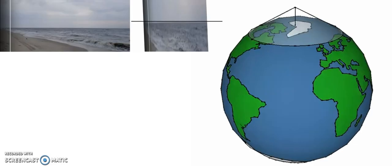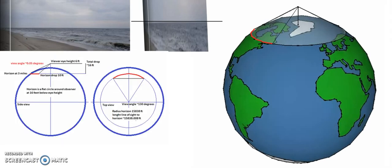Looking at the horizon and the principle of the horizon being a circle on the globe, the problem is this: if the horizon is a circle and you are in the center, the horizon has the same radius from side to side in your field of view. So when you are on the beach and your eye height is six feet, the horizon is at about three miles, the drop is about ten feet, making the horizon a flat circle around you at sixteen feet below your eyes with a radius of three miles.